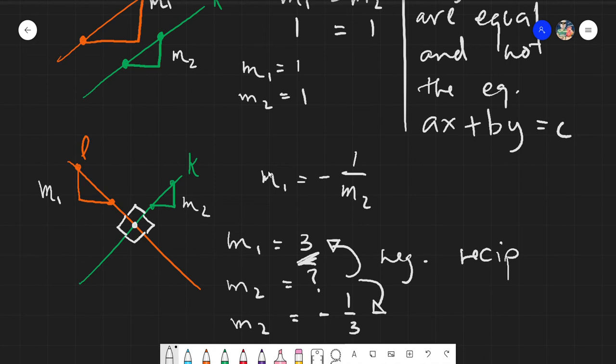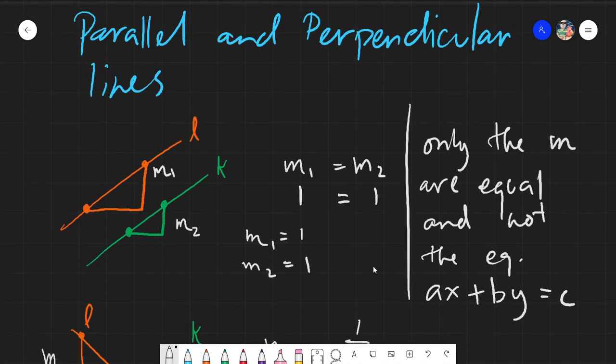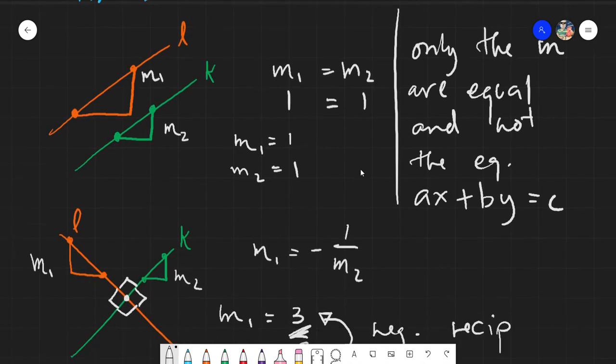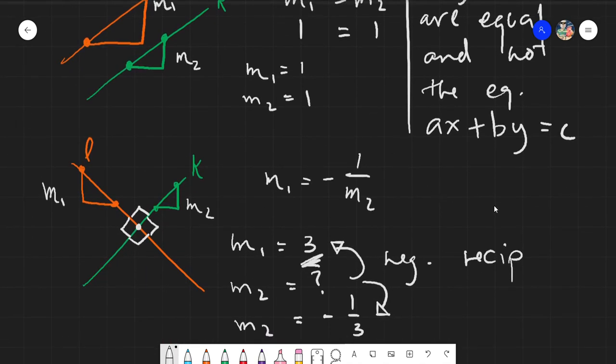So then again, let's just have a small recap. The parallel lines will have equal slopes, and our perpendicular lines will have negative reciprocal slopes.